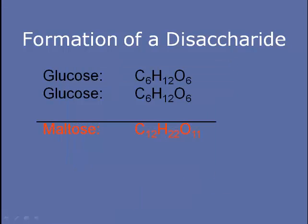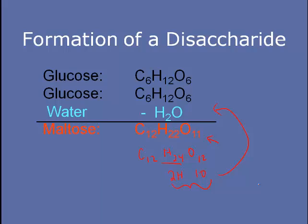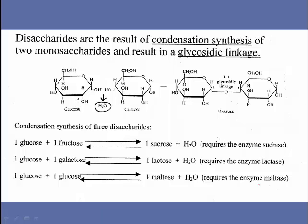When a disaccharide forms, we get approximately a 1 to 2 to 1 ratio, but not a perfect one. If we add up the atoms in two glucose molecules, we get C12H24O12, not C12H22O11. We seem to be missing two hydrogens and one oxygen — the equivalent of a water molecule. When we factor that back in, the formula for maltose makes sense. Those atoms had to be removed to form the bonds between the two glucose molecules. All disaccharides form through condensation or dehydration synthesis of two monosaccharides, and all result in glycosidic linkages.